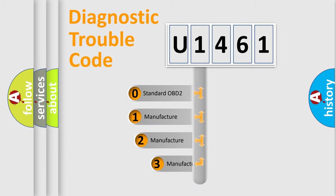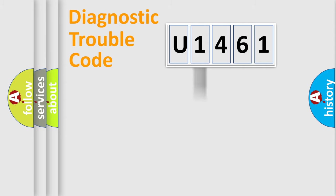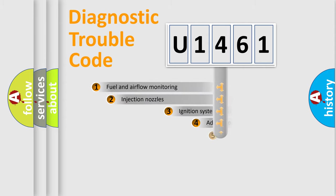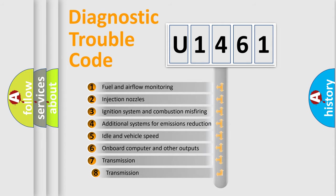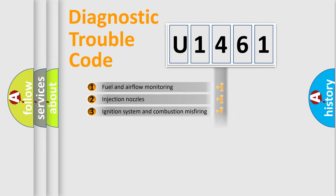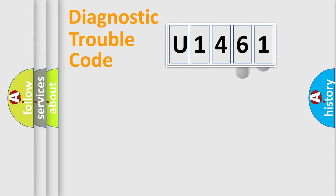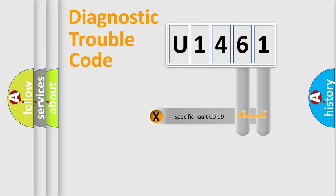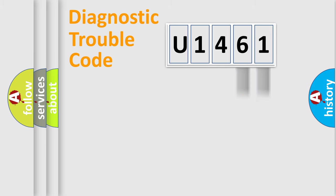If the second character is expressed as zero, it is a standardized error. In the case of numbers 1, 2, or 3, it is a manufacturer-specific expression of the error. The third character specifies a subset of errors. This distribution is valid only for the standardized DTC code, and only the last two characters define the specific fault of the group.